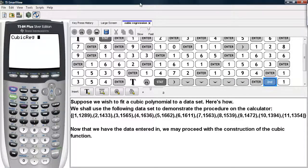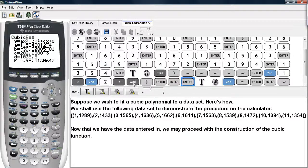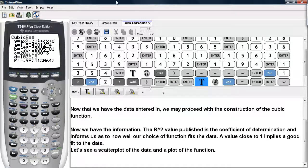And then we'll go ahead and tell the calculator to use L1 as the x-coordinates. Then type a comma. And then L2 for the y-coordinates. And then a comma. And we're going to store the results under the Y1 option. You can get to this by hitting VARS, Y-VARS, and then selecting the Y1 slot under function.